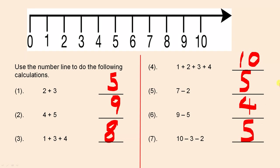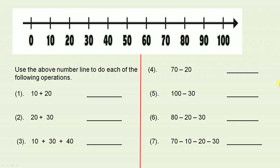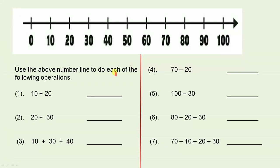Let's see what we have on the next slide. Now this is a number line and it goes up by tens — remember I said you can do skip counting? Use the above number line to do each of the following operations.